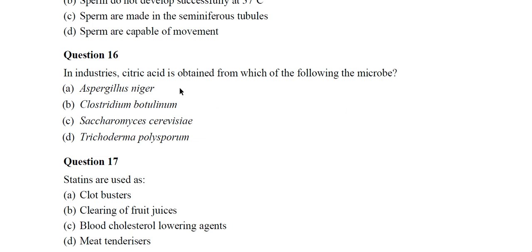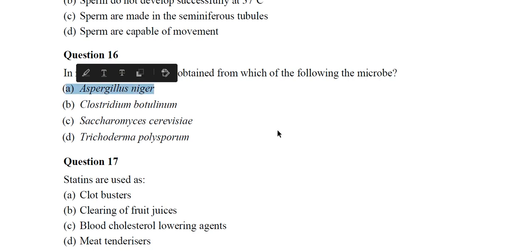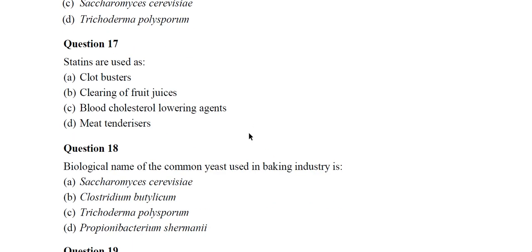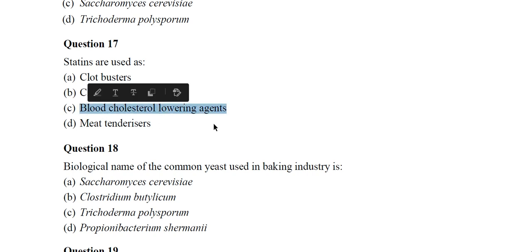Question 16: In industries, citric acid is obtained from which of the following microorganisms? The correct answer is Aspergillus niger. Question 17: Statins are used as — option C: blood cholesterol-lowering agents.